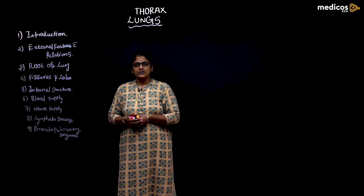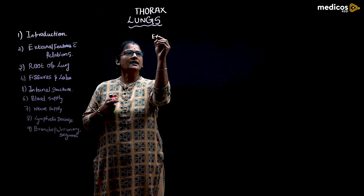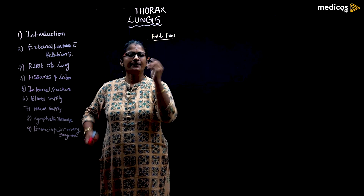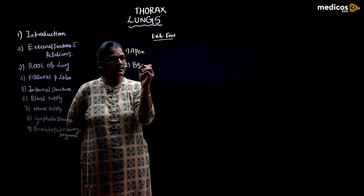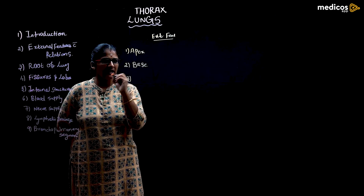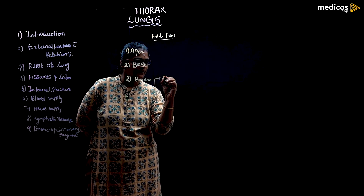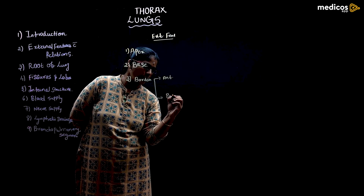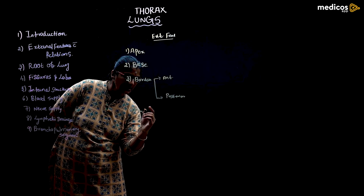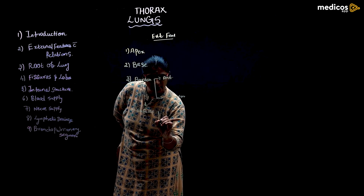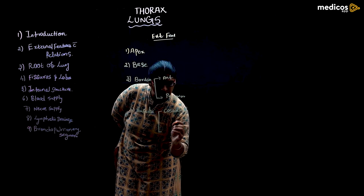Moving on to external features. The lung has an apex and a base. It has two borders: the anterior border and the posterior border. It has two surfaces: the costal surface and the medial surface. These are the external features of the lung.